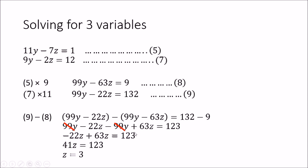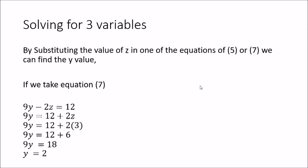The 99y terms cancel, leaving -22z + 63z = 123, which simplifies to 41z = 123, so z = 3. Now we substitute z = 3 into equation 7: 9y - 2(3) = 12, giving 9y = 18, and therefore y = 2.